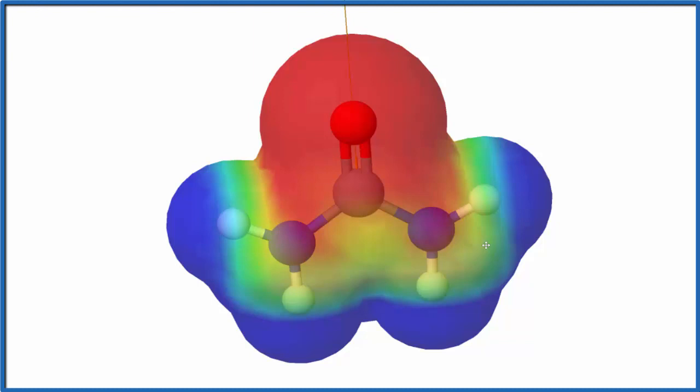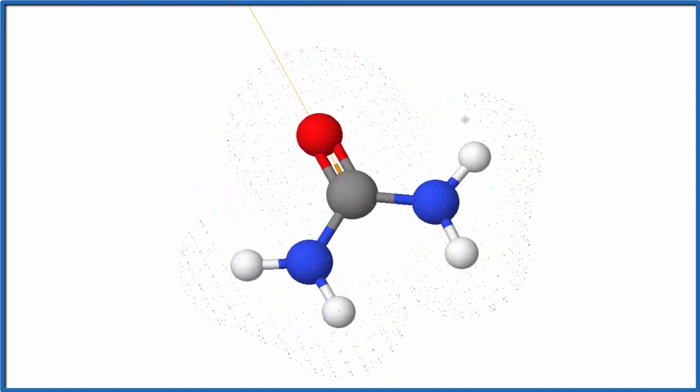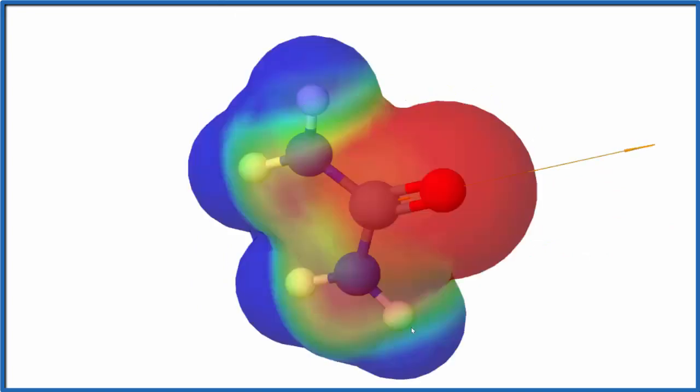Urea, the CO(NH2)2, it's a polar molecule. And you can really see that visualized here in this drawing where we have the red for the negative, the blue for the positive.